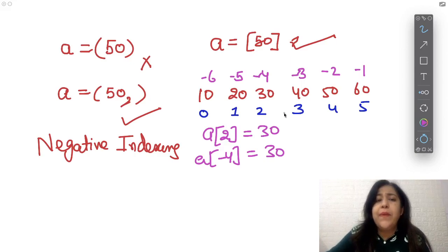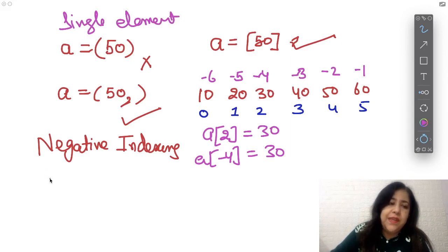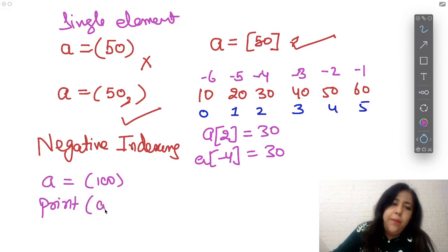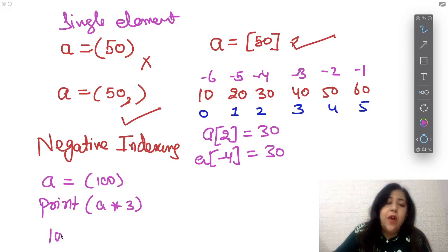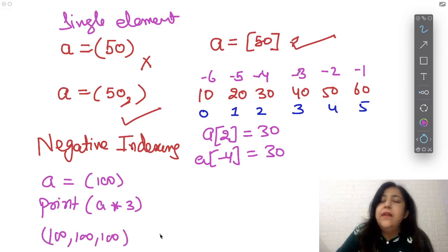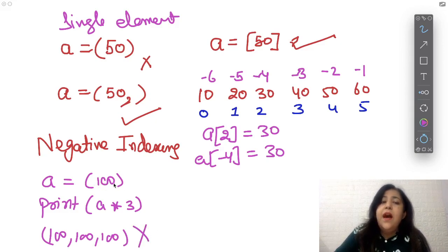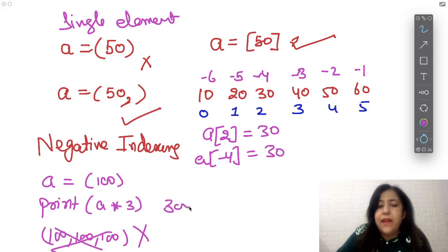This single-element point is very important because it's a repeated CBSE question. They give you A = (100) and ask: what will print A * 3? If it were a tuple or list, the star sign means replication — it would repeat 100 three times. But since there is no trailing comma, (100) is just an integer, not a tuple. So A * 3 gives you 300 — because 100 is an integer and 100 × 3 = 300. If there had been a comma, or square brackets, it would have replicated.